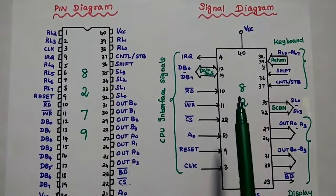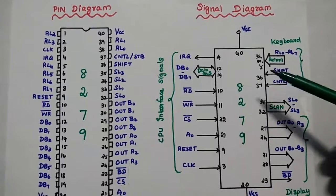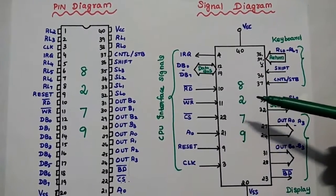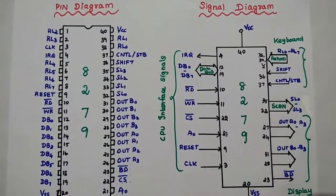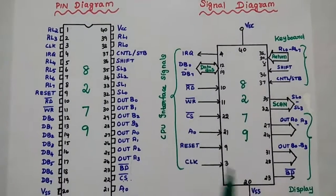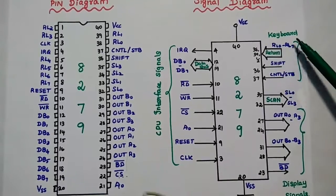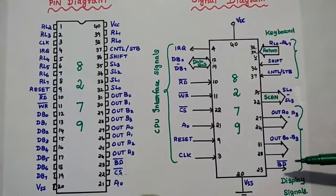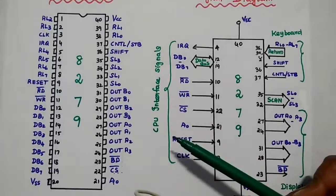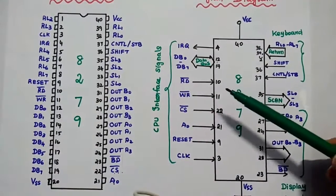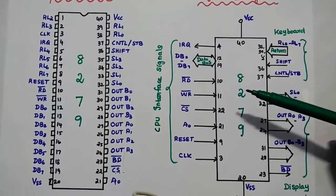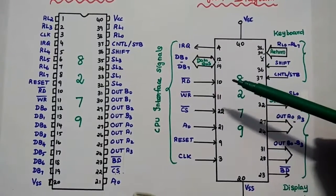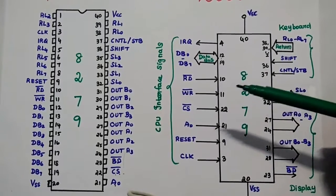Next is the signal diagram. In this signal diagram, the signals are grouped based on their functionalities. We have CPU interface signals, keyboard-related signals, scan signals, display-related signals, and power supply signals.